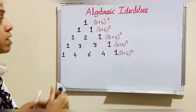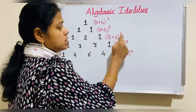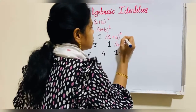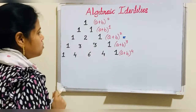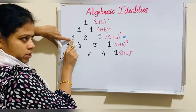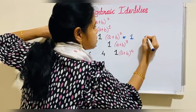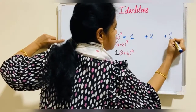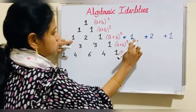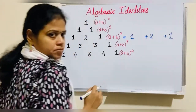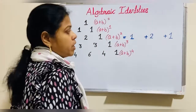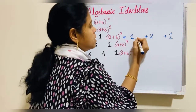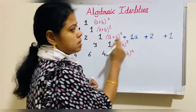So now let's expand the identity (a+b)². For that, use the third row, which belongs to it. The first number is 1, the second is 2, and the third is 1. I just wrote 1, 2, and 1 to expand this identity. Always the left term starts with the variable a and the right term starts with the variable b.